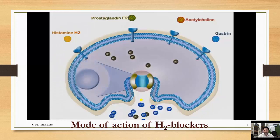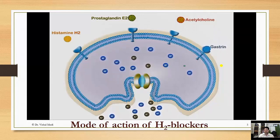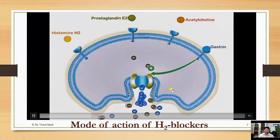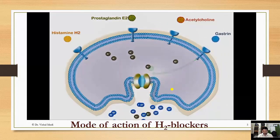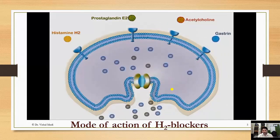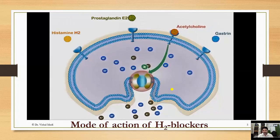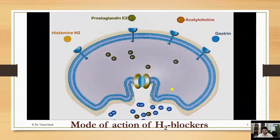In the parietal cells, there is an exchange of potassium with the proton, and the proton comes outside the parietal cells to the gastric lining, synthesizing gastric juice. This is done by three types of receptors: gastrin, acetylcholine, and prostaglandin. When gastrin is released, it activates the H+/K+ ATPase pump and exchanges potassium with the hydronium ion. Acetylcholine also acts by binding with muscarinic M3 receptors, driving the exchange of proton with potassium.